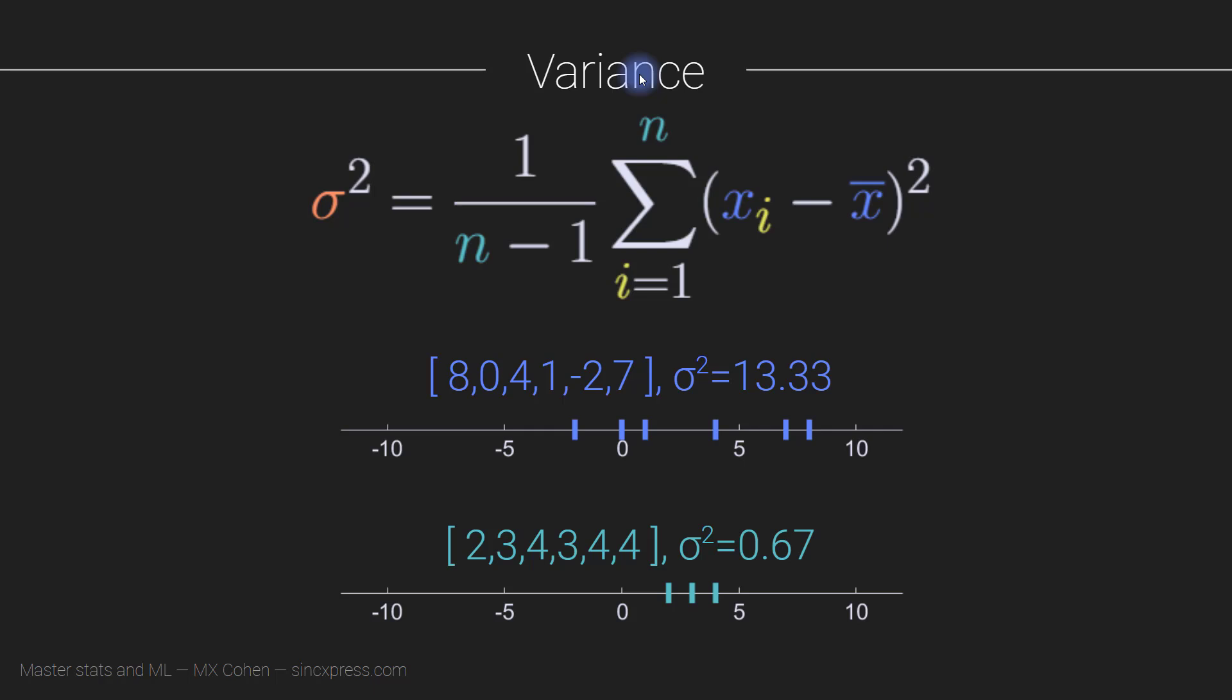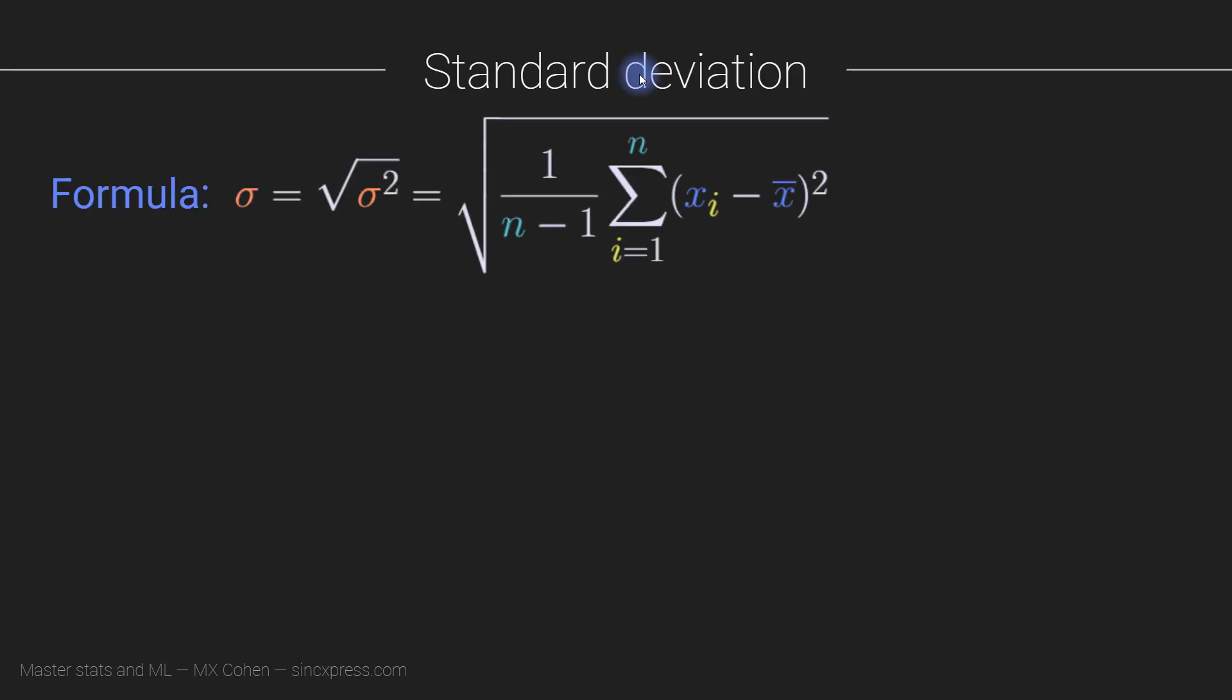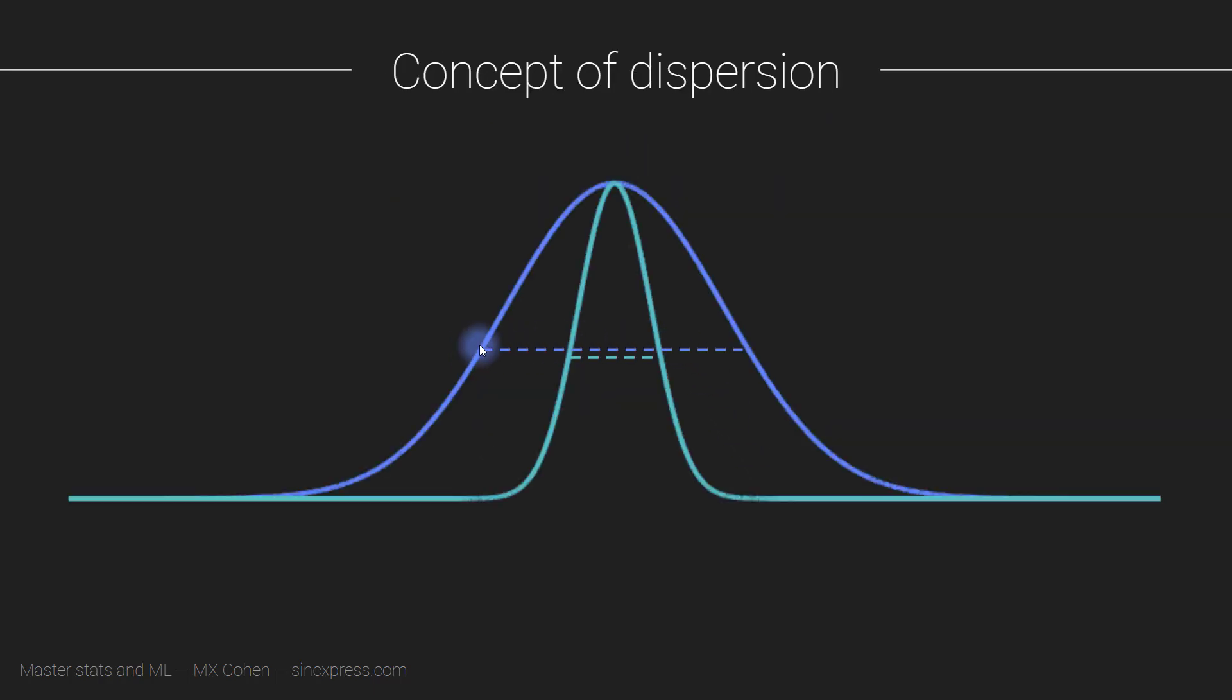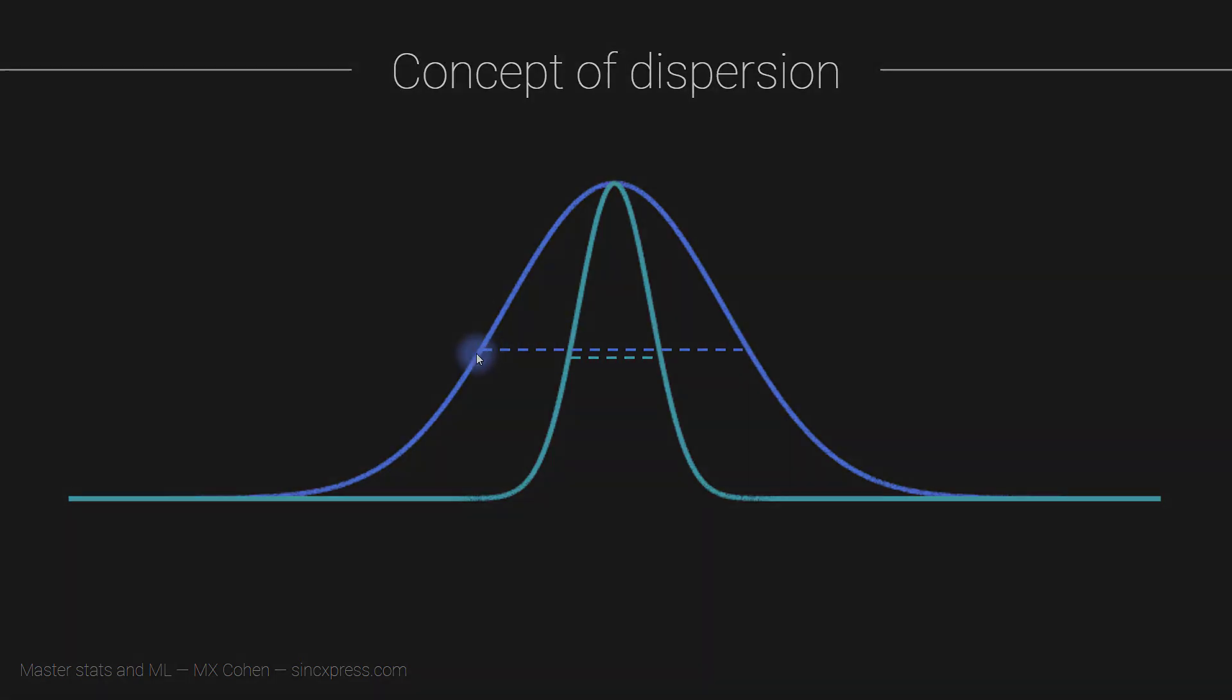The other measure of dispersion that's commonly used is called standard deviation. Now standard deviation is exactly the same thing as the variance. So I'm showing you the formula just for completeness, but you don't have to worry about the math. The point is that variance measures the width of this distribution here. And standard deviation is basically the same thing as variance. It's just the square root of variance.